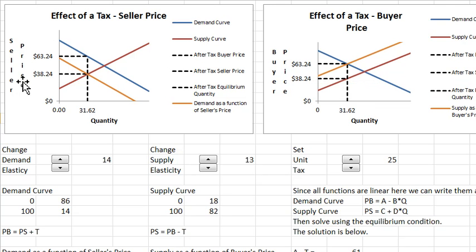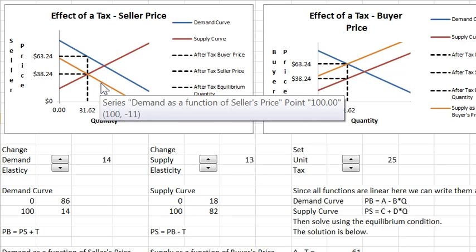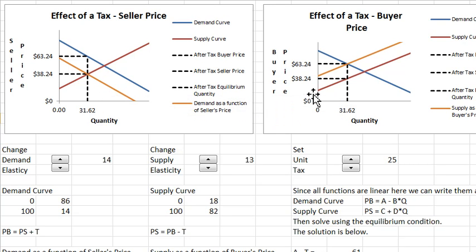When you represent the seller price, the demand curve does not stay fixed because the demand curve is in terms of the buyer price, so you have to translate the demand curve as the seller price plus the tax. When you represent the buyer price, it's the supply curve that shifts. You have to understand what it is that you're plotting on these axes and do the analysis accordingly.